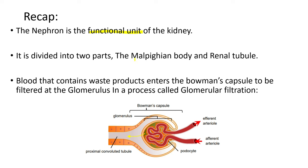Remember that the nephron is divided into two parts: the Malpighian body as well as the renal tubule. We have covered this in our previous two videos about the nephron that explained the Malpighian body structure as well as the labels associated with the nephron. The blood that contains waste products enters the Bowman's capsule to be filtered at the glomerulus.